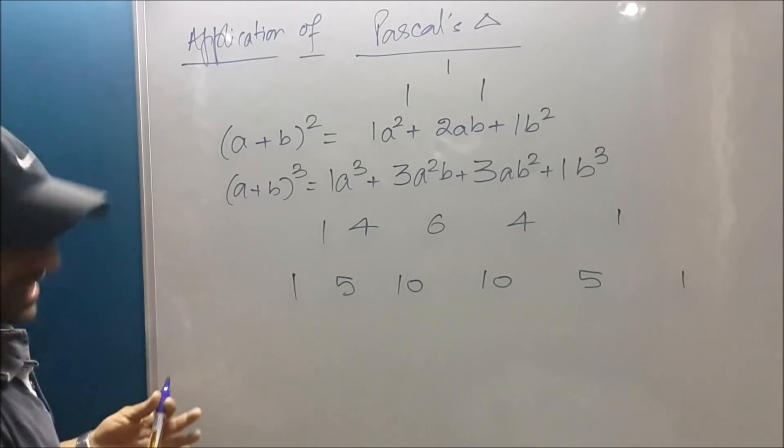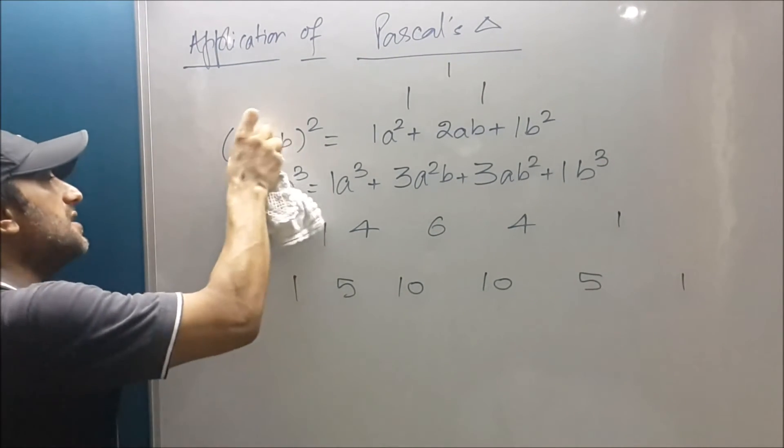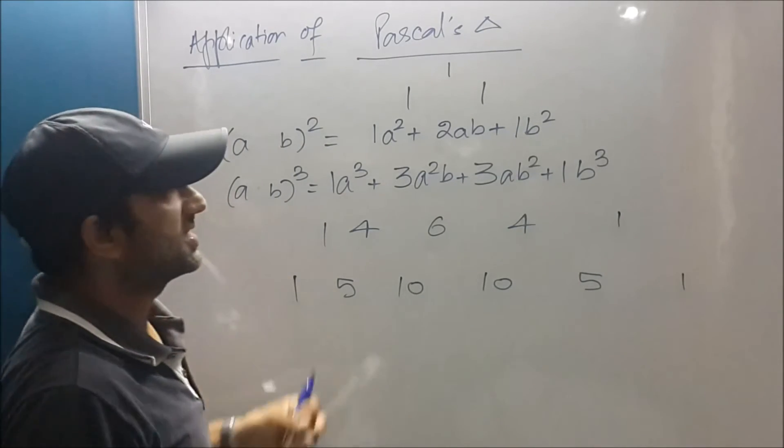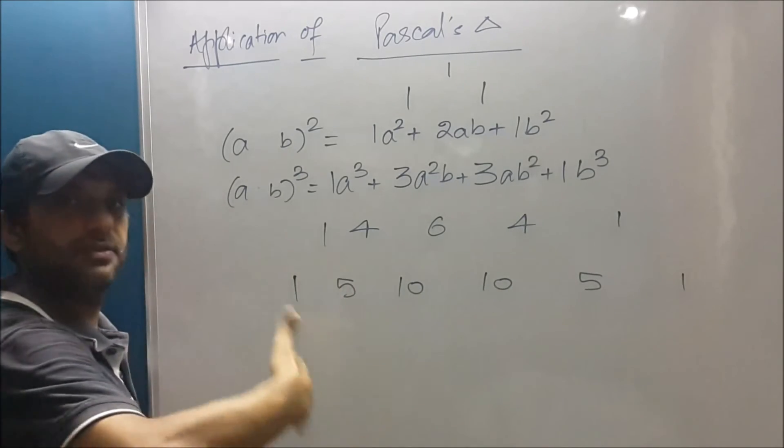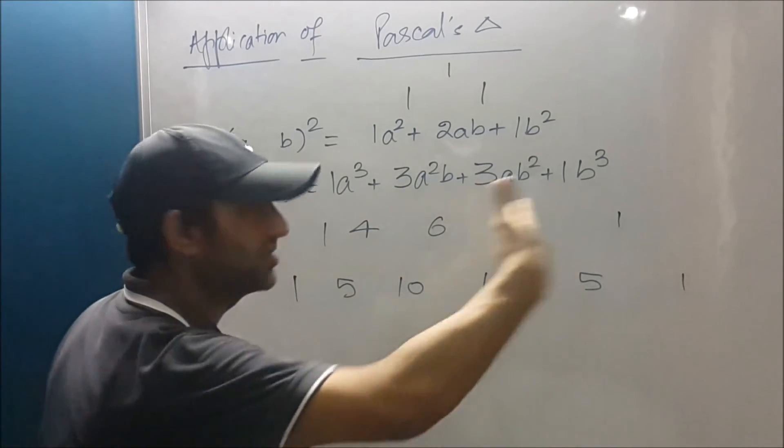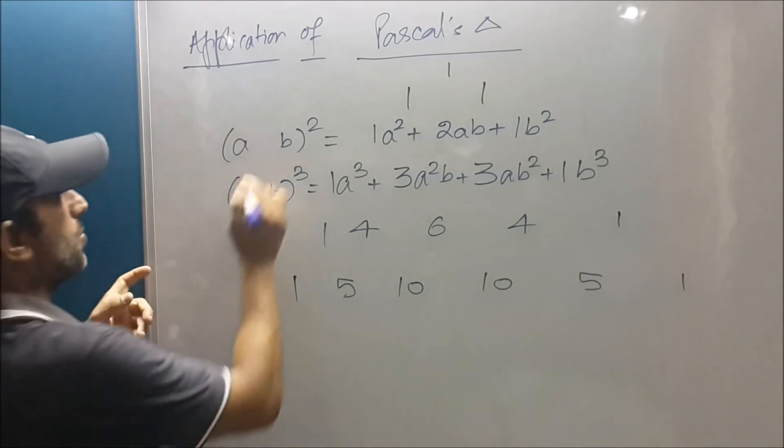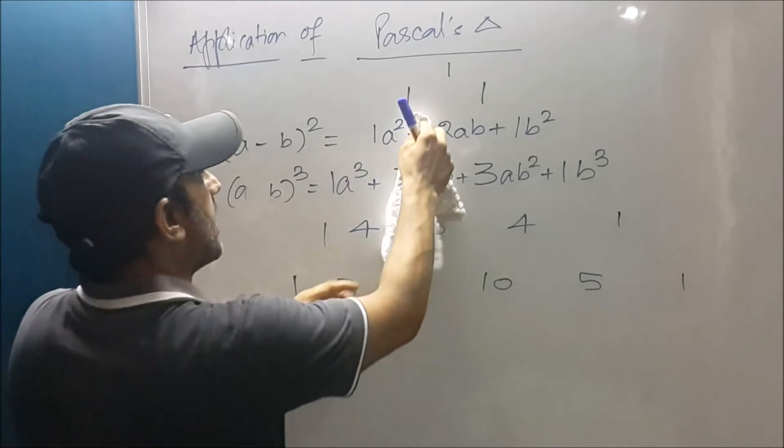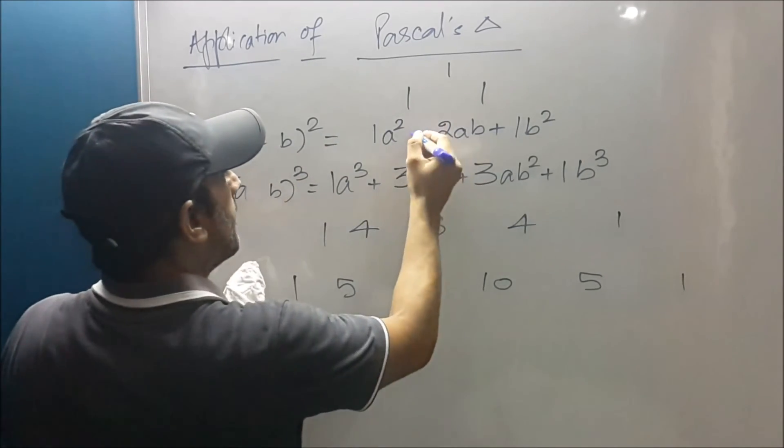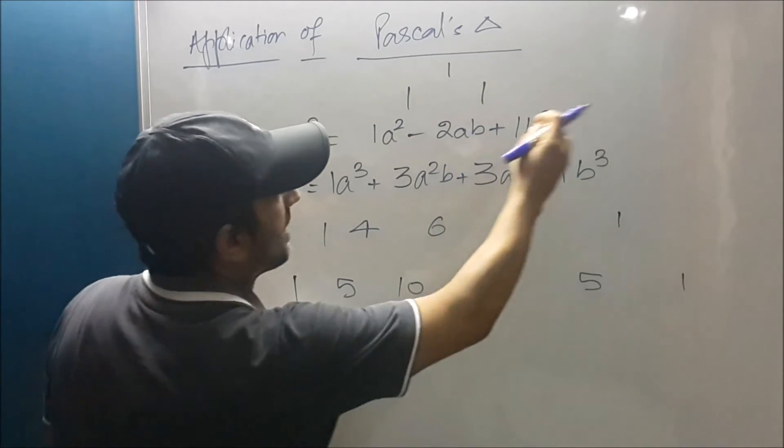Also when someone has to open (a - b)³ or (a - b)², the process is very simple: put alternate signs starting with positive, then negative, then positive and so on. If I had to open (a - b)², I'll put a² minus 2ab plus b².